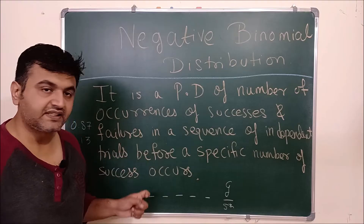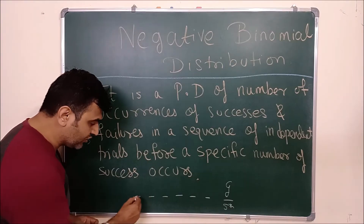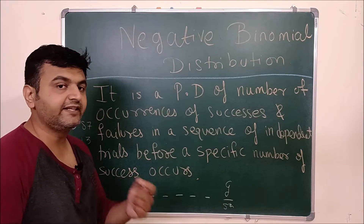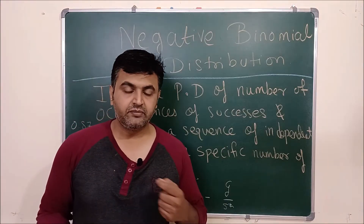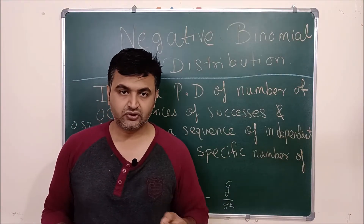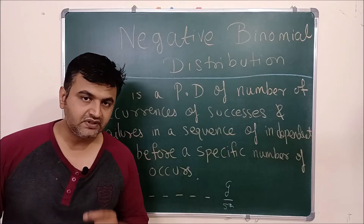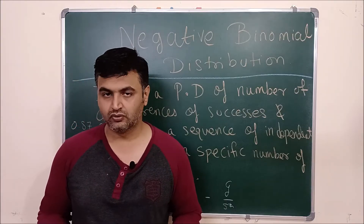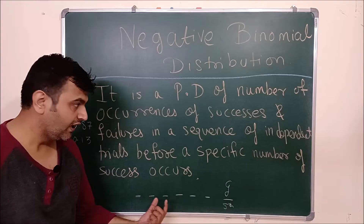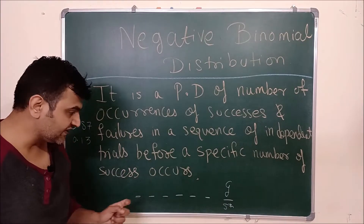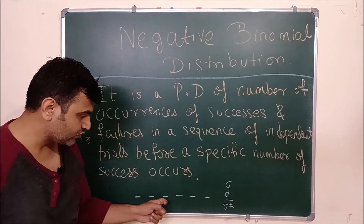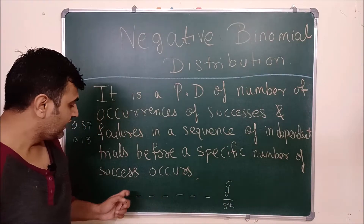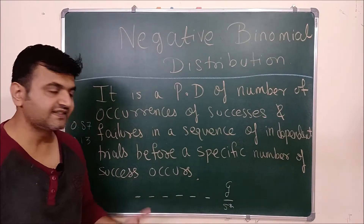Does this satisfy the conditions? Yes. Each shot is a trial and it's an independent trial. If he misses scoring in the 1st shot, that does not mean he will also miss in the 2nd shot — he may or may not score. So all the trials are independent. It's a sequence of successes and failures: score, not score, score, score, not score.